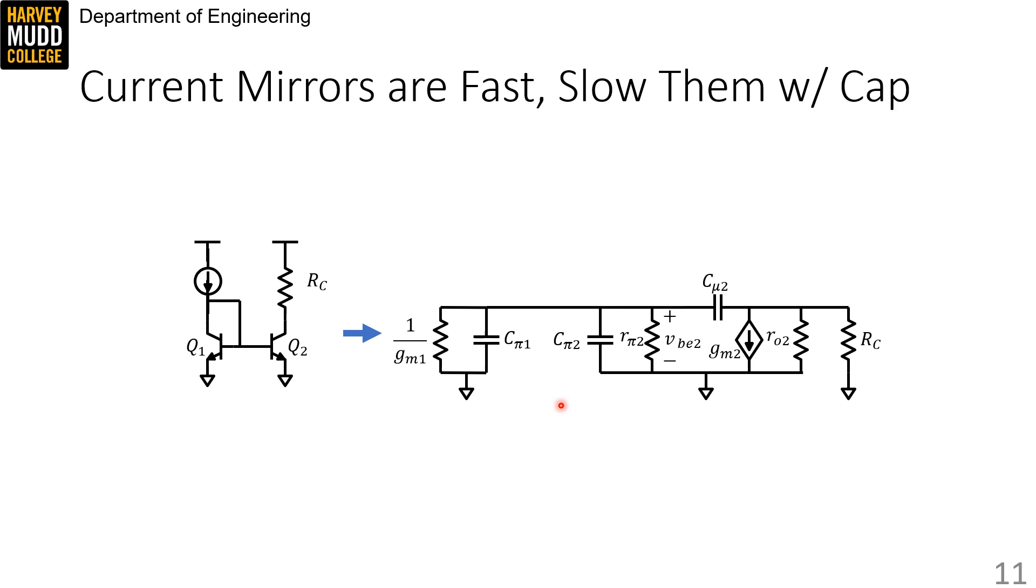But this is kind of bad. Mirrors are biasing circuits, so we really don't want them to change, and if we could have them respond slowly to disturbances, so they act like a low-pass filter, that would be good. And that can help with stability too, for reasons we'll get into later.